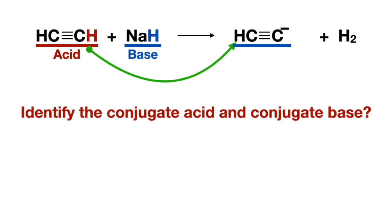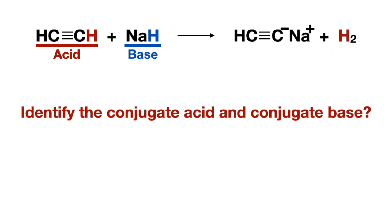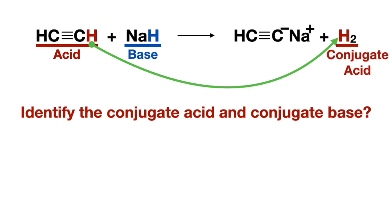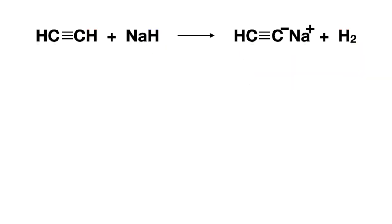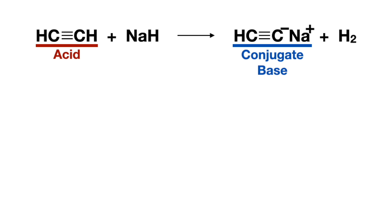One way to identify conjugate acids and bases is to follow the acid compound to the product side and notice it has a negative charge, making it the conjugate base and the other product the conjugate acid. Or you can follow the proton to the product side and call that the conjugate acid and the other product the conjugate base. So we have the acid and its conjugate base, and the base and its conjugate acid.